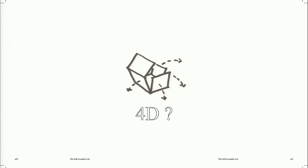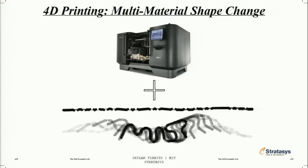So remember I said 4D. Today, for the first time, we're unveiling a new project — a collaboration with Stratasys — called 4D printing. The idea behind 4D printing is that you take multi-material 3D printing, deposit multiple materials, and add a new capability: transformation. Right off the bed, the parts can transform from one shape to another shape directly on their own. This is like robotics without wires or motors — you completely print this part and it can transform into something else.